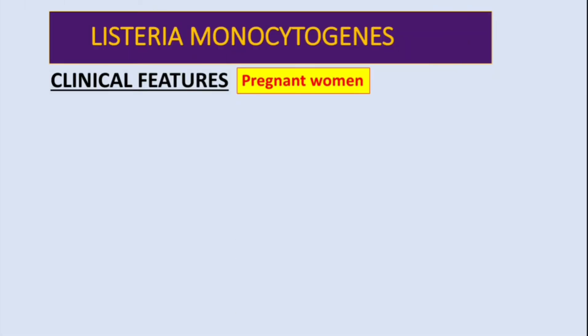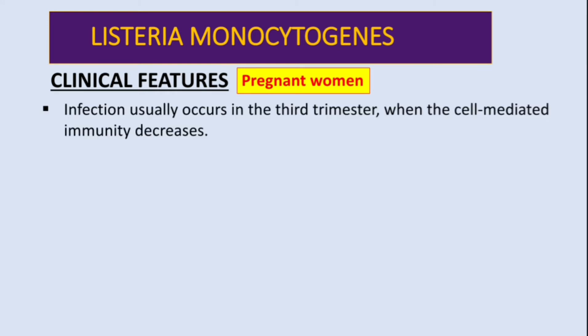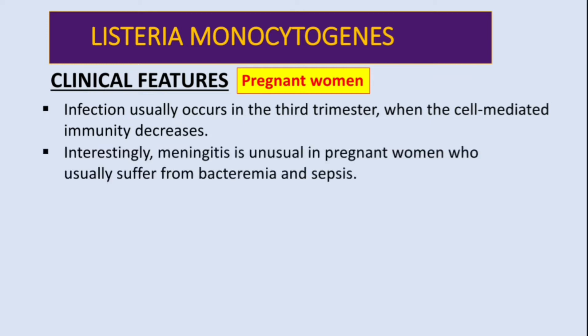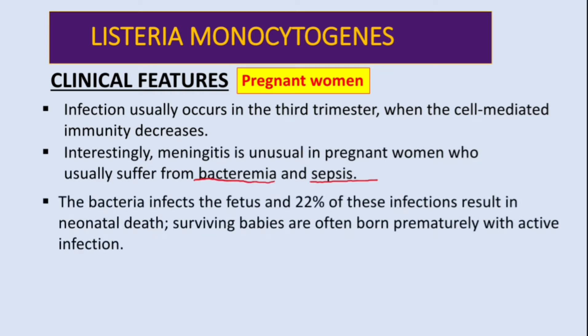The first group is pregnant women. Infection usually occurs in the third trimester when cell-mediated immunity decreases. Interestingly, in these individuals meningitis is unusual — they usually suffer from septicemia, bacteremia, and sepsis. This bacteria infects the fetus, and 22% of these infections can result in neonatal death. Surviving babies are often born prematurely with active infection.